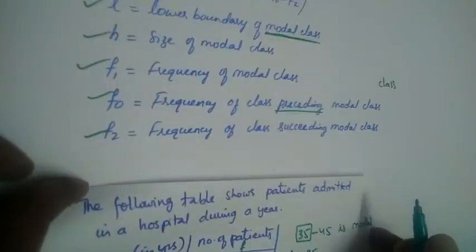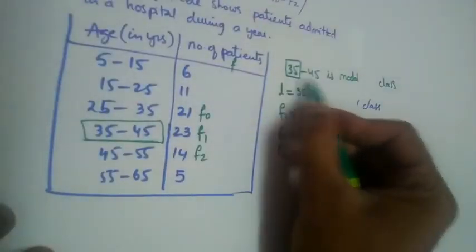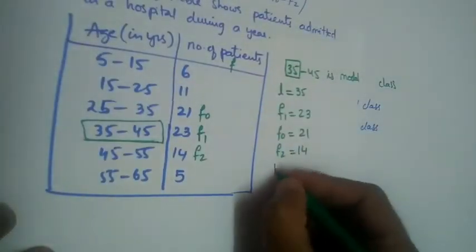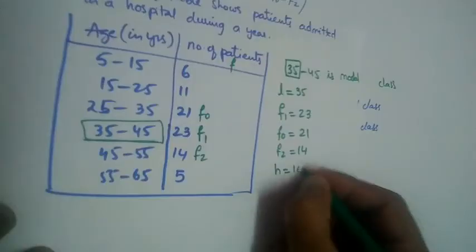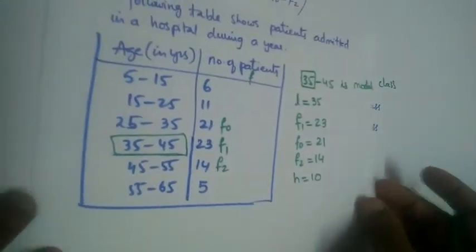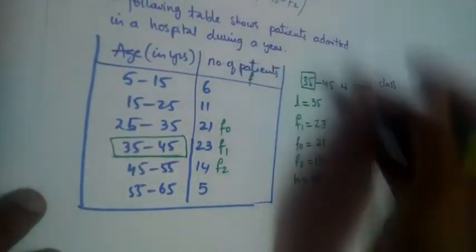H is the size of the modal class. The modal class is 35 to 45, so H equals 10. Now let us substitute these values into the formula.